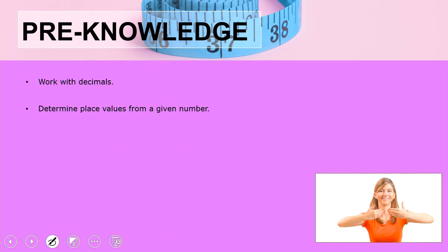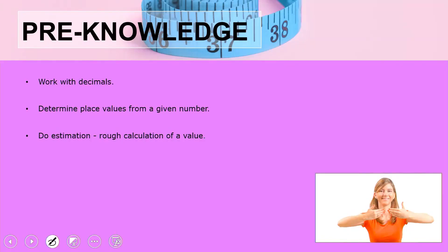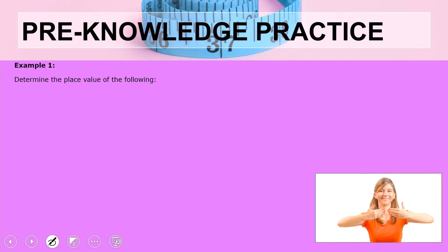Let us have a look at the pre-knowledge — what you have acquired in your previous grades — that we can use now as we do this rounding. The pre-knowledge we are working with is decimals. I hope you all worked with decimals in your lower grades. You were able to determine the place value from a given number, and also to do estimation. Remember, estimation is the rough calculation of a value. Let us do a little bit of practice to recap on what you did in the lower grades.